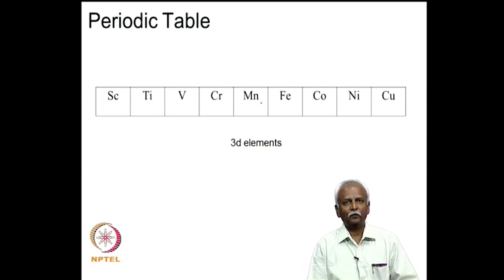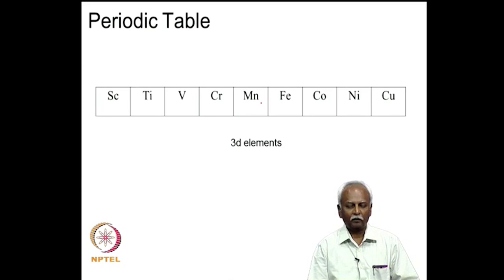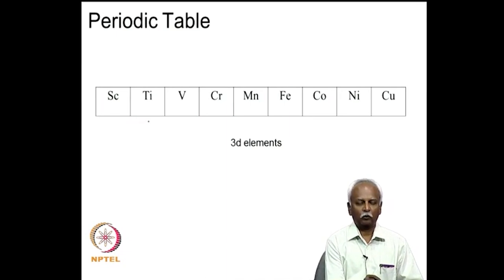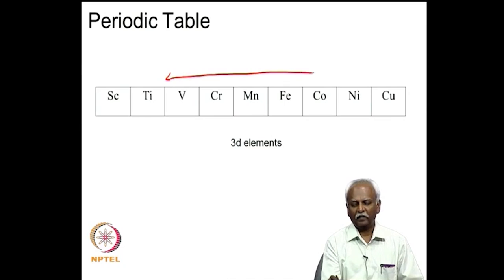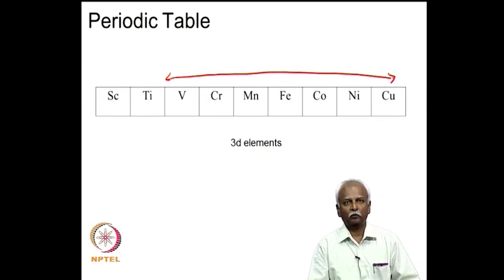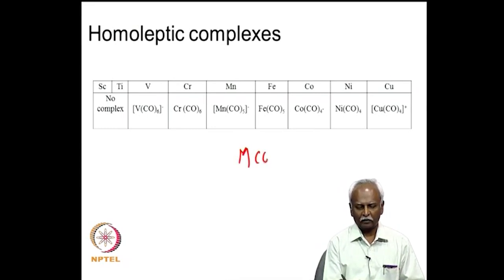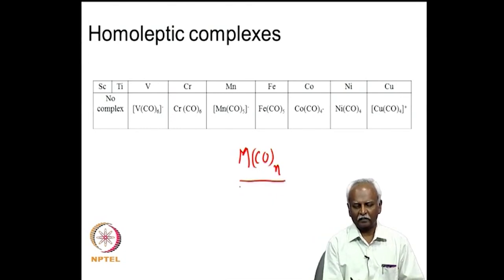If you look at the first row of transition metals — from scandium to zinc — we will consider only the elements forming good carbon monoxide complexes, and those are in the range from vanadium to copper. All of them are capable of forming homoleptic or M(CO)N complexes, where N copies of the same ligand are found in the coordination sphere of the metal.